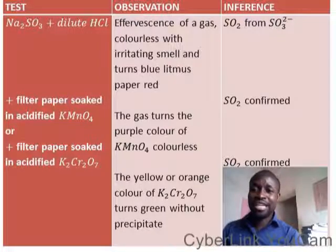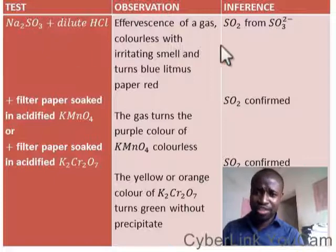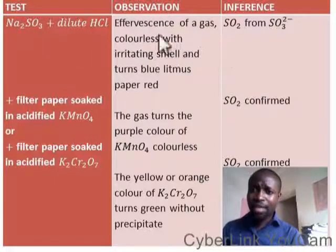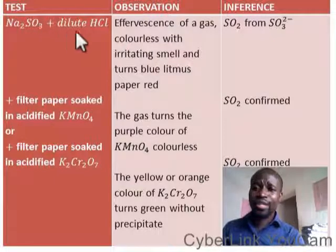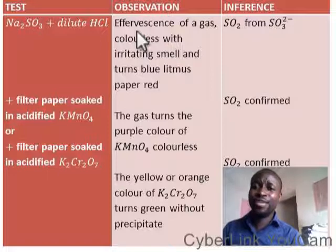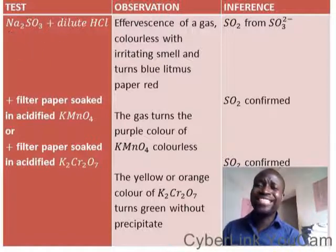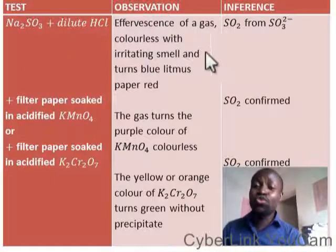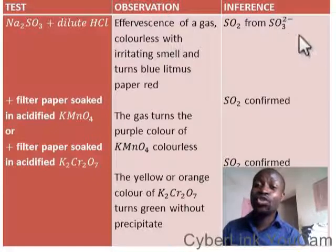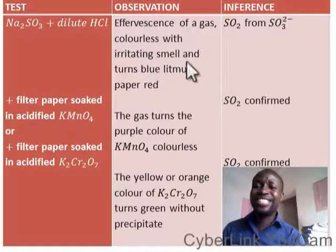Let's move on to the next slide. Now look at this. When you have another test, observation and inference — when you have Na2SO3 plus dilute HCl, you have effervescence of a gas. But look at the compound that is given to you: Na2CO3. So from this compound, you should start thinking that the gas that will come out will be CO2, and that CO2 is from a radical which is CO3²⁻. So there will be effervescence of a gas.